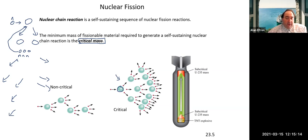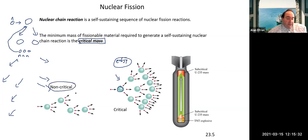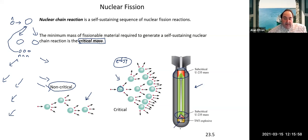At or above critical mass, the fission chain reaction continues to grow, releasing enormous energy and radioactive byproducts. In a nuclear bomb, a sub-critical mass of uranium is combined with explosives — when detonated, the pieces fit together to form a critical mass and kick off the chain reaction. Keeping uranium below critical mass is essential for safe handling.